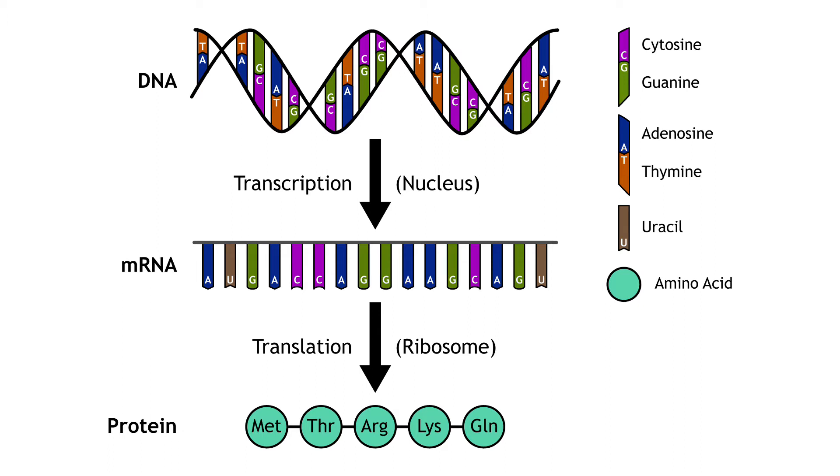The single-stranded messenger RNA is created from the DNA sequence via complementary base pairing. Like DNA, there are four bases, but in RNA the thymine base is replaced by uracil.